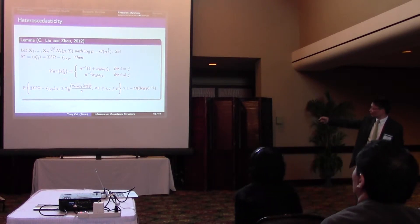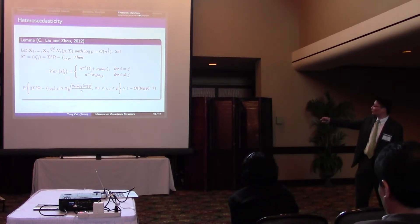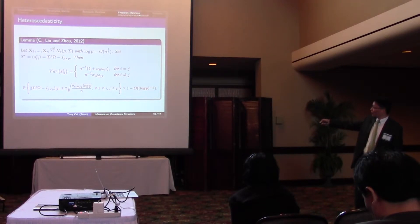And we can also do a relatively fine analysis of the high probability bounds. Basically, the ij-th element of this matrix is upper bounded by this quantity with very high probability.